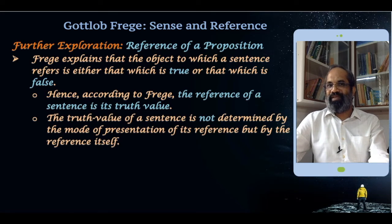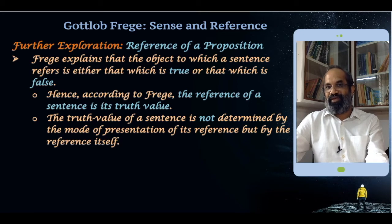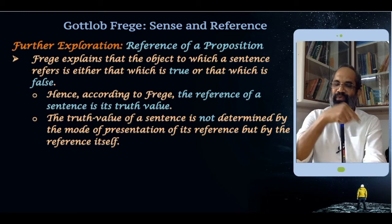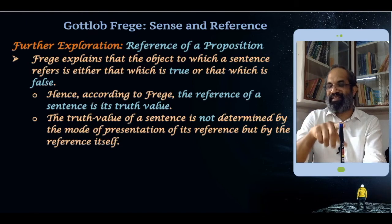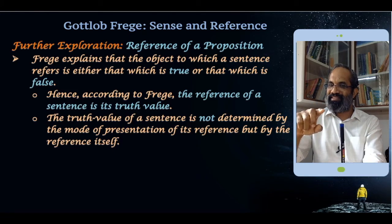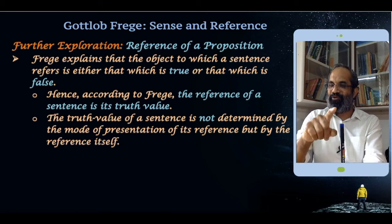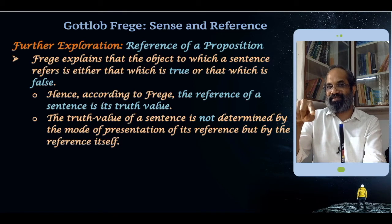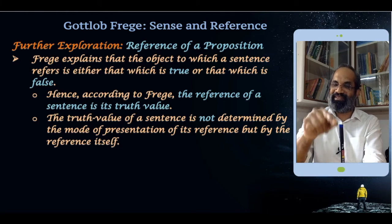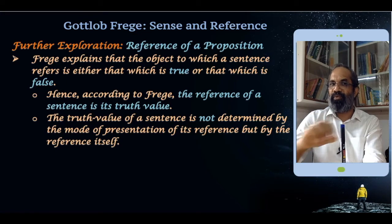The truth value of a statement is not determined by the mode of presentation of its reference, but by the reference itself. We have seen that one and the same object can be referred to through different signs. Whatever the mode of presentation, what makes the proposition true or false is the state of that object. So the truth value of a sentence is not determined by how you express it, but by how the reference exists. If the pen is blue, then it is true; if not, it is false — it has no relation with the mode of presentation.